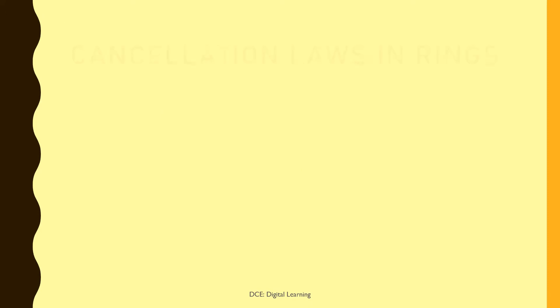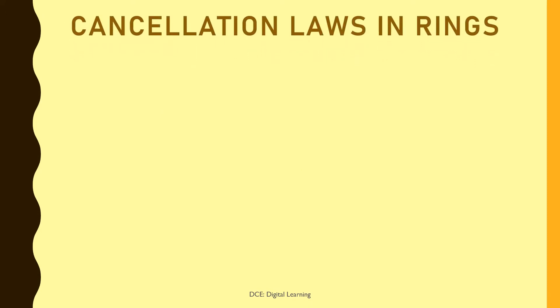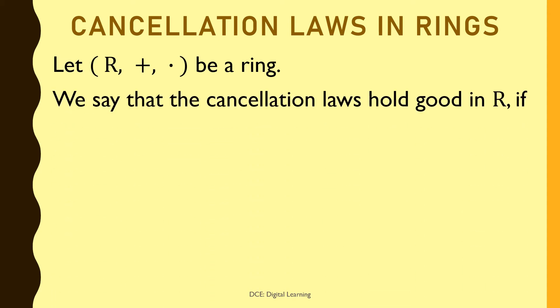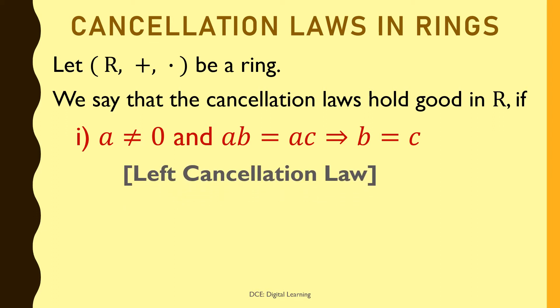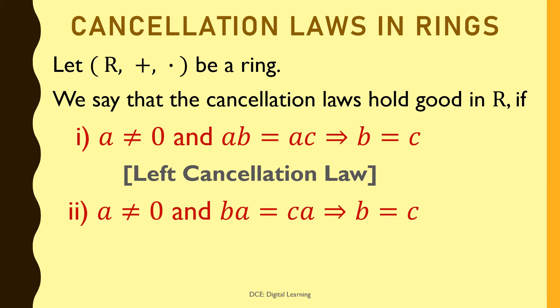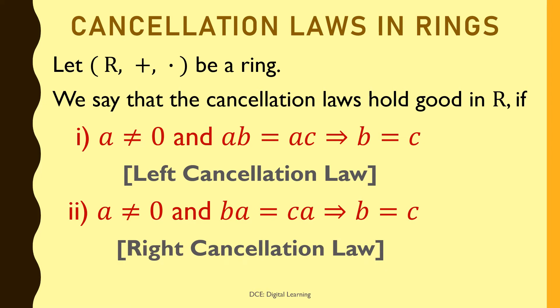Cancellation laws in rings: let (R, +, ·) be a ring. We say that the cancellation laws hold good in R if: a ≠ 0 and ab = ac implies b = c (left cancellation law), and a ≠ 0 and ba = ca implies b = c (right cancellation law).